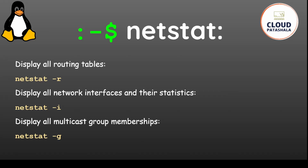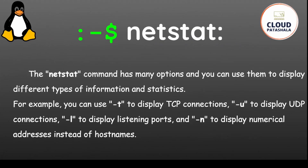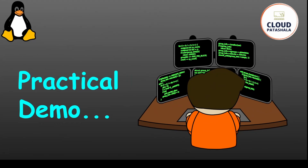If you want to display all multicast group memberships, you could say netstat -g. The netstat command has many options: -t to display TCP connections, -u to display UDP connections, -l to display listening ports, and -n to display numerical addresses instead of host names. Let's look at a quick demo on how network administrators use the netstat command on a daily basis.